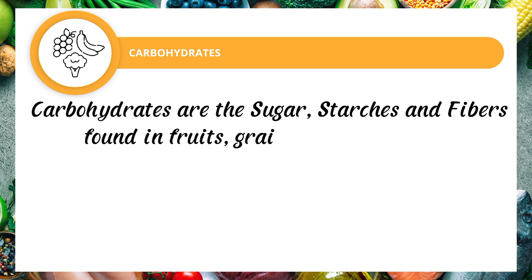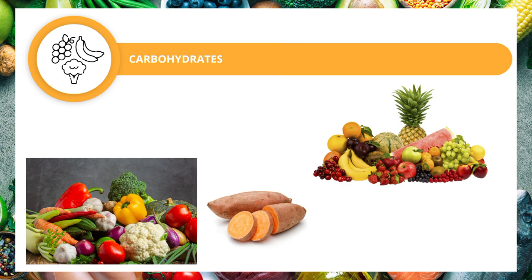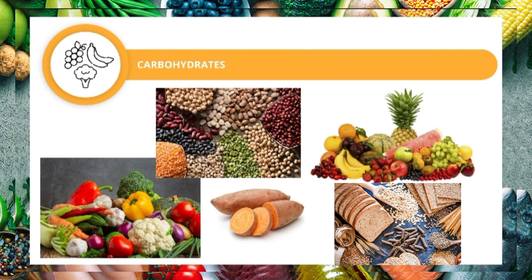Carbohydrates are the sugars, starches, and fibers found in fruits, grains, and vegetables. They're the most important source of quick energy in your diet because they easily break down into glucose, which the muscles and brain use to function. We can get carbohydrates from fruits, vegetables, sweet potatoes, legumes such as lentils and chickpeas, and whole wheat grains such as brown rice, whole wheat bread, and pasta.